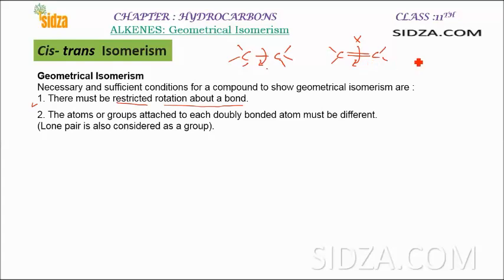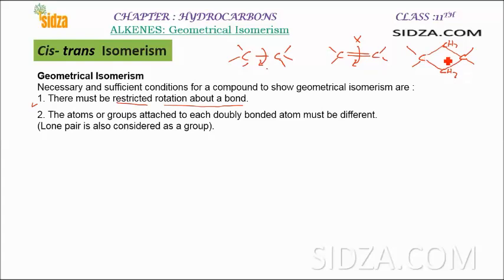We also get geometrical isomers in cycloalkanes, because in a cyclic molecule with a single bond, you can also stop rotation around two carbon atoms. Between those two carbons in a ring you have two bonds — one from each side — so rotation is not possible in cycloalkanes either, and geometrical isomers can also occur there. However, in this video I will only concentrate on geometrical isomers in alkenes.